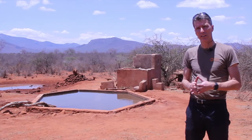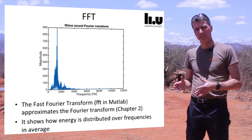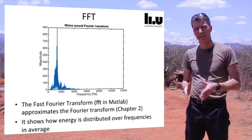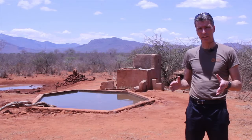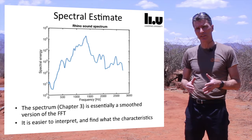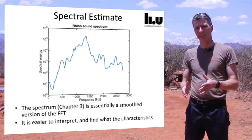We can also analyze the sound using the Fourier transform. The Fourier transform shows you the distribution of energy over frequencies. As you see in the plot, certain frequencies have higher amplitude than others, but it's quite noisy and hard to interpret. So suppose we smooth this function — then we get something called a spectral estimate. The spectrum is easier to interpret because it's smoother; you can see the fundamental frequency and the harmonics. This can also be used to build a classifier of how a rhino sounds.